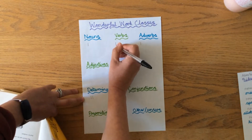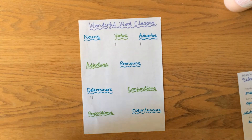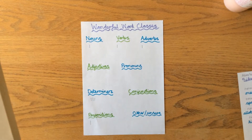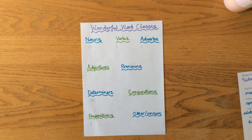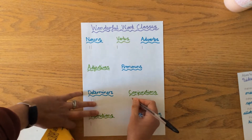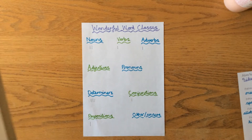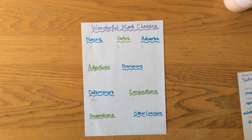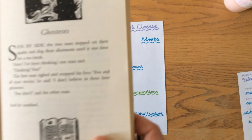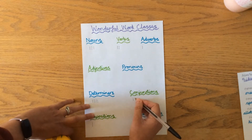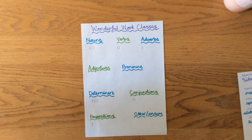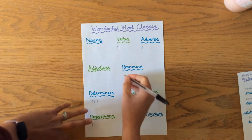'The two men stepped' — 'stepped' is an action word so that must be a verb. 'Stepped on' — 'on' is an example of a preposition. 'Their' is another determiner. 'Spades' is a noun — it's an object. 'And' is a conjunction because it links two clauses together. 'Dug' is a verb — that's an action word. 'Their' is another determiner. 'Allotments' is a place, so that's a noun. After allotments: 'until' is a conjunction or a preposition — it's kind of a bit of both.